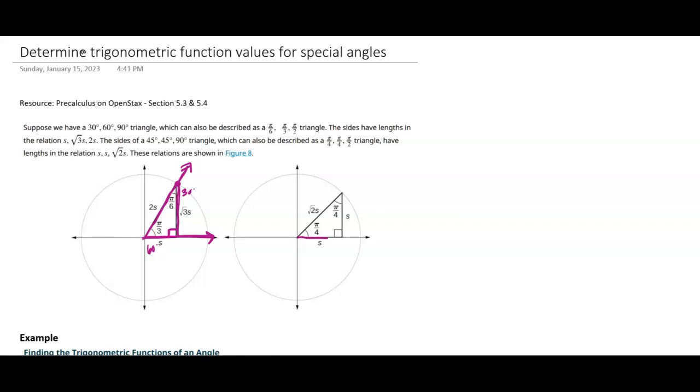Similarly, we can do that for a 45, 45, 90. So this would be 45 degrees, the same as pi over 4. And then we can drop this down. Notice that this length and this length are the same. We call that S. And then this length of the hypotenuse is square root of 2 times S.